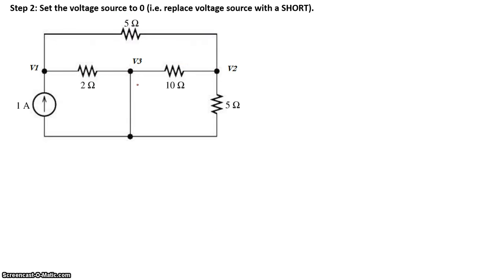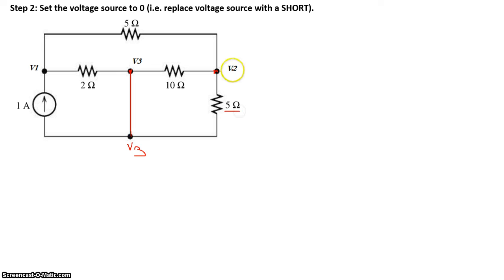Replacing a voltage source means setting it to zero — in other words, we replace the voltage source with a short. Now looking carefully at the circuit, we have a 10 ohm resistor between nodes V3 and V2. The 5 ohm resistor is also between nodes V2 and V3, because this is a straight wire making this node V3 as well. So the 10 ohm and the 5 ohm resistors are in parallel with each other.